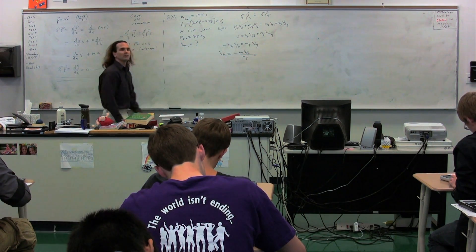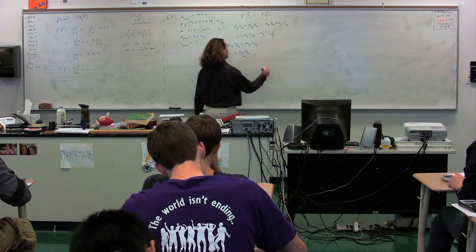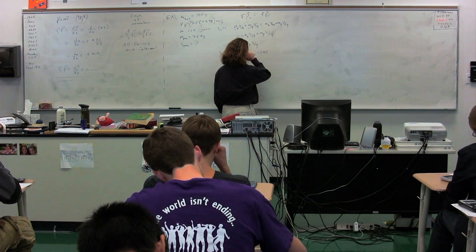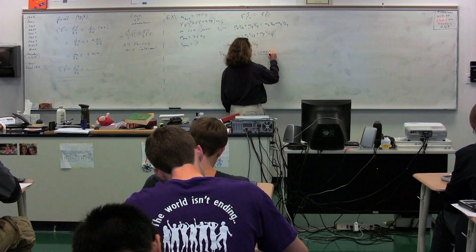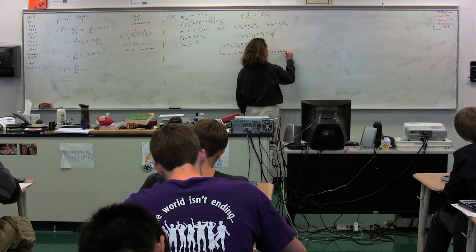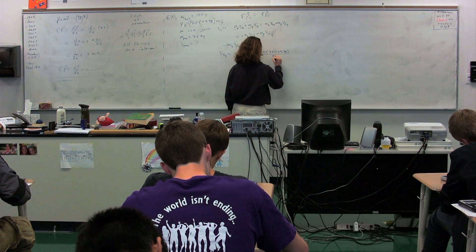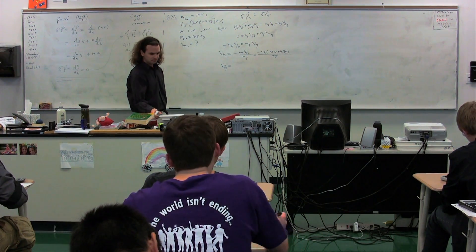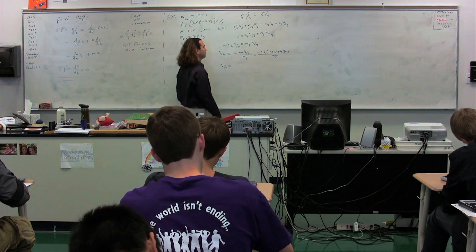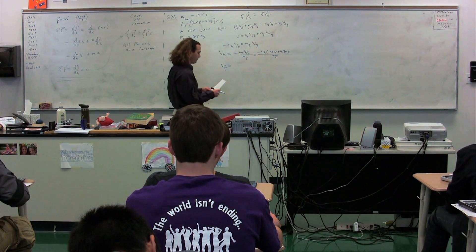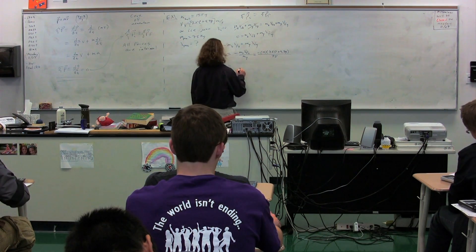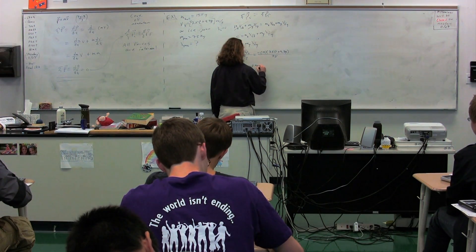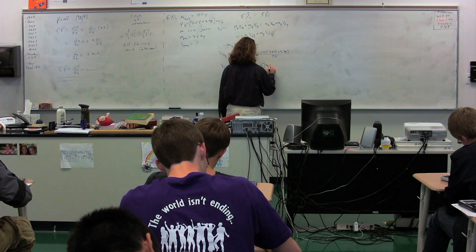Plugging in all the numbers: mass of the ball is 15 kilograms, times the final velocity of the ball 7.5i plus 4.7j, divided by the mass of you, 75 kilograms. So the final velocity of you equals negative 1.5i minus 0.94j meters per second.